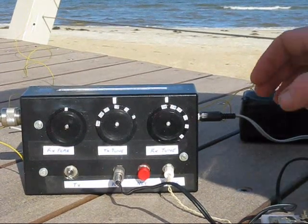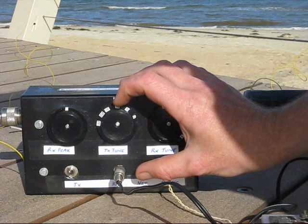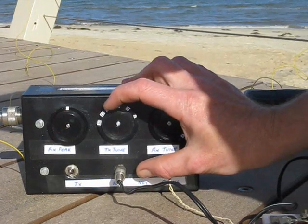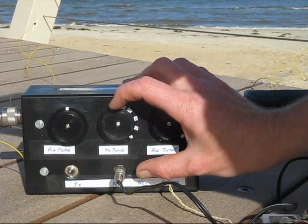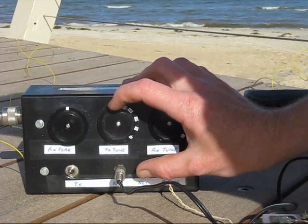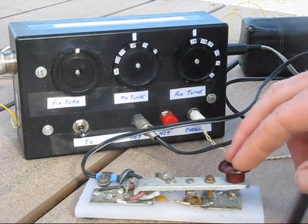Now, I want to call in to the CW net, so the first thing I do is I need to get myself on frequency. I press the net control and adjust the tuning until I'm zero beat. I can then flip to transmit and make my call.